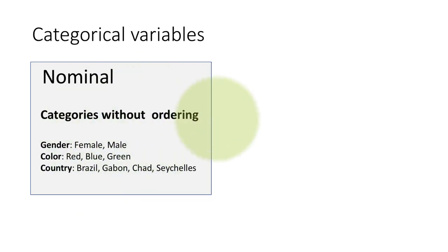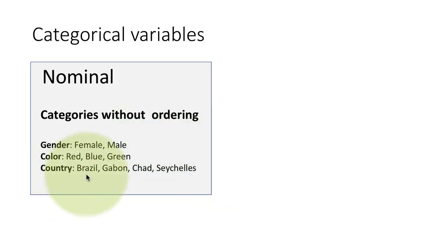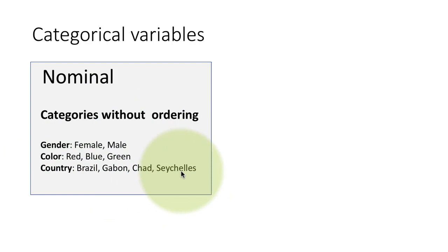For example, you might have a variable called gender in a data frame, and the value might be female or male depending on a particular row. Similarly, you may have parts in a data frame where each part has an associated color — red, blue, or green. Or you may have data about people where one column is the country they belong to, with values like Brazil, Gabon, Chad, Seychelles, etc. All of these are values of specific variables, but there's no implied ordering whatsoever.